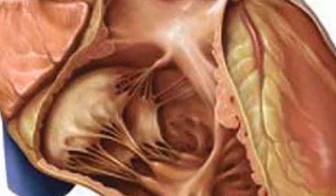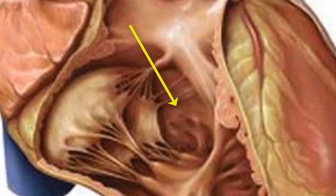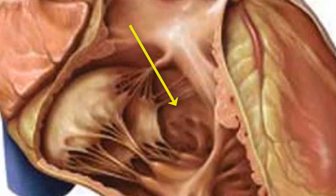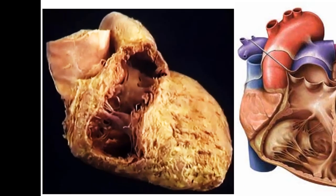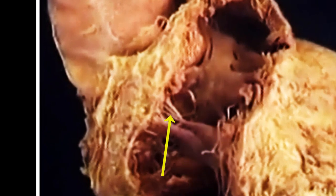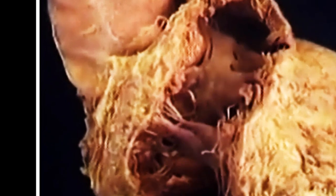We can also notice the interventricular septum between the right and left ventricles; its lower part is muscular while its upper part is membranous. In a real heart with the right ventricle open, we can see the papillary muscles, the chordae tendineae, the infundibulum of the right ventricle, and the pulmonary orifice.